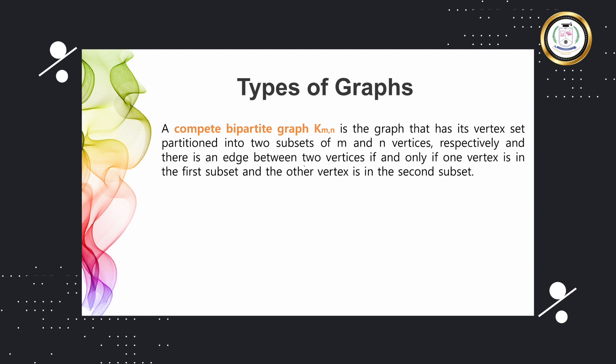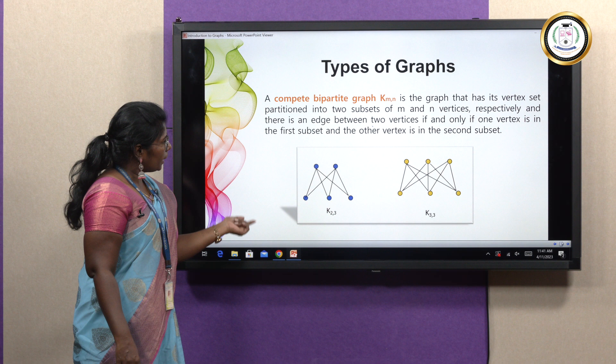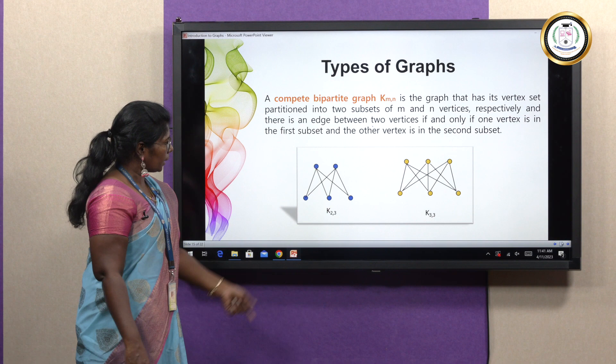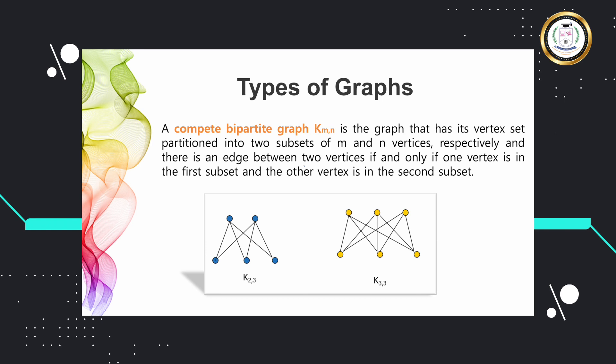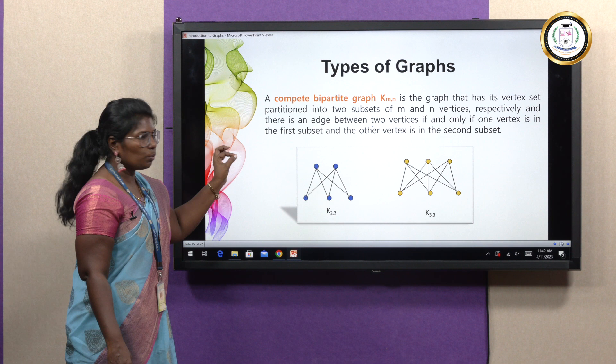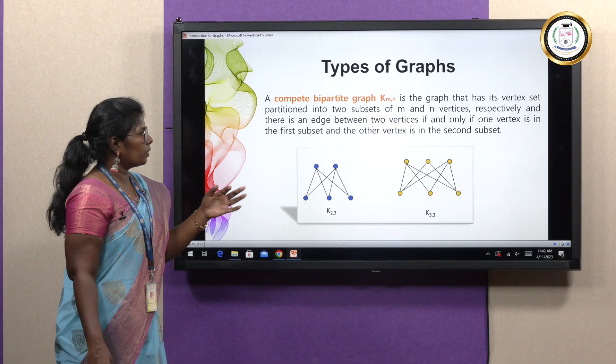A complete bipartite graph, denoted KMN, is a bipartite graph where every vertex from one set is connected to every vertex in the other set. For example, K23 has two vertices in V1 and three vertices in V2, and every vertex in V1 is connected to V2 and vice versa. K33 is an example of a complete bipartite graph with three vertices in V1 and three vertices in V2.